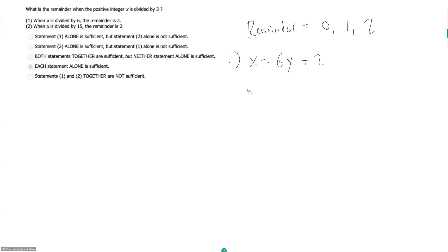So if y is 1, x is equal to 8. If y is 2, x is equal to 14. And it's going to go up by 6 every time. So x can be 8, 14, 20, 26, 32, 38, 44, 50, etc.